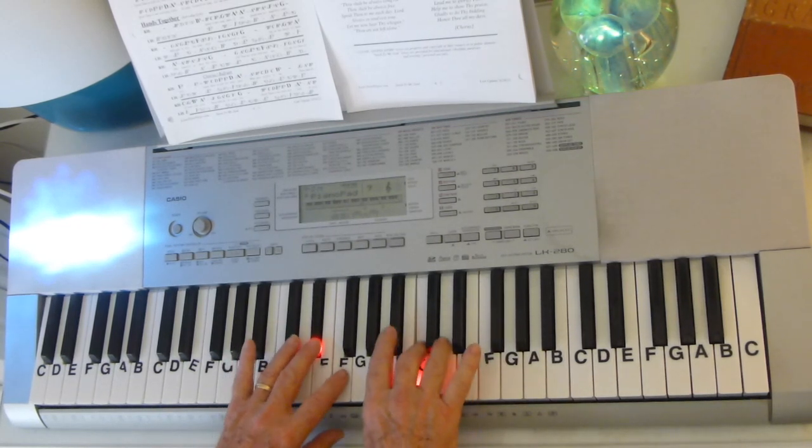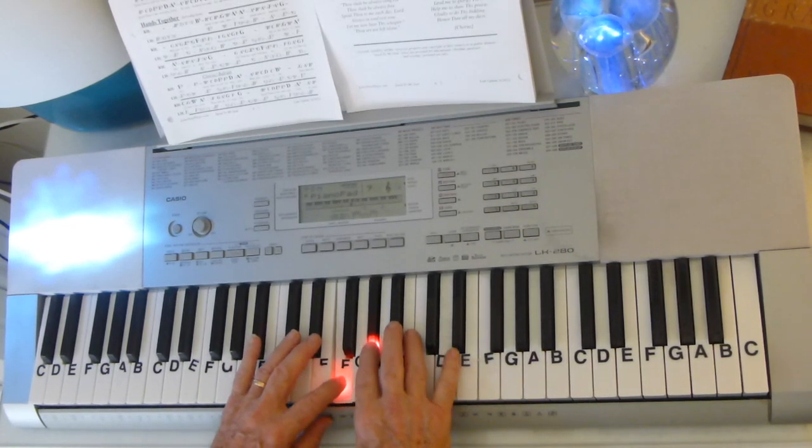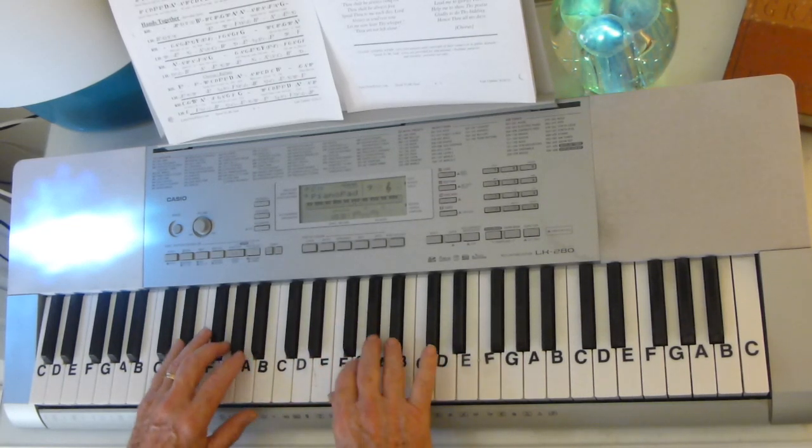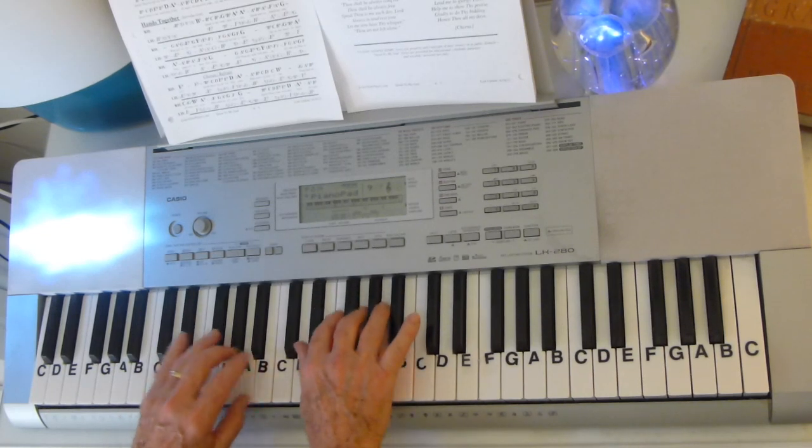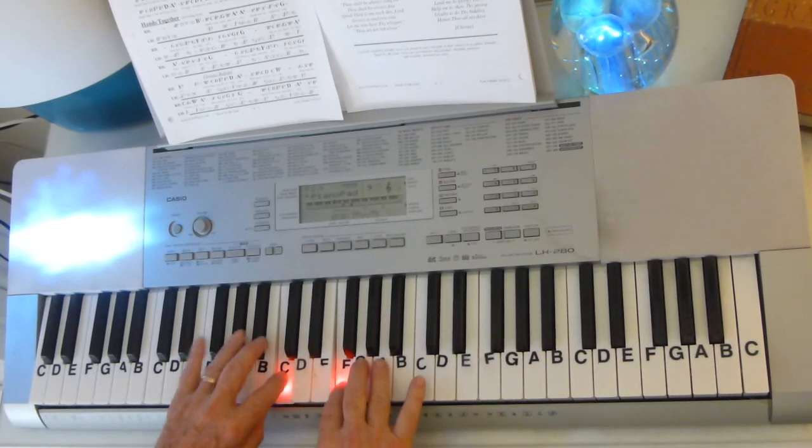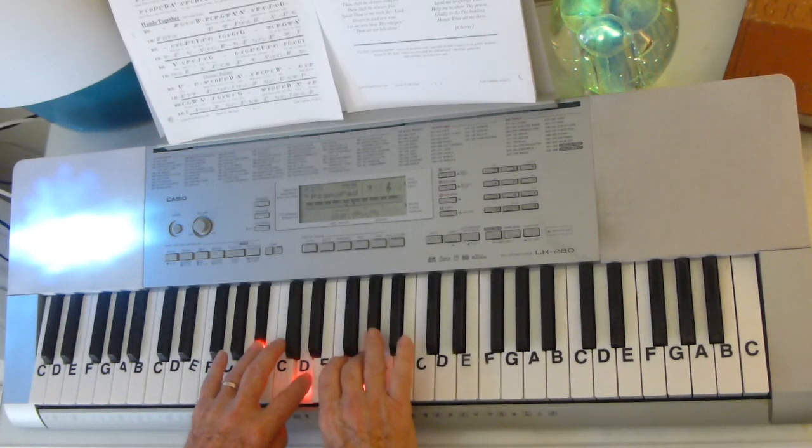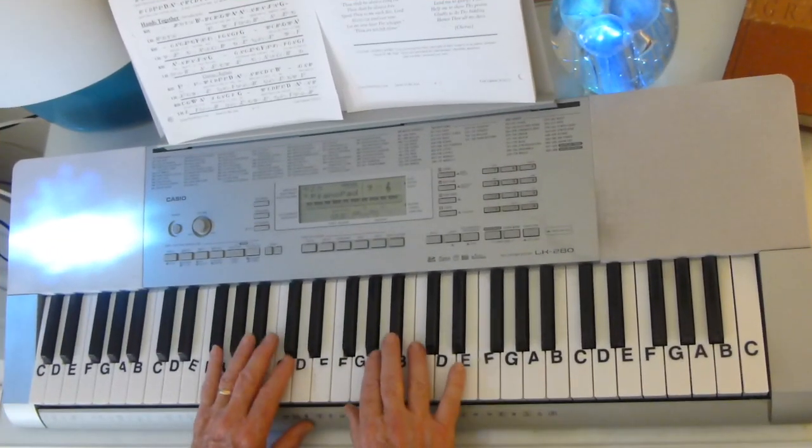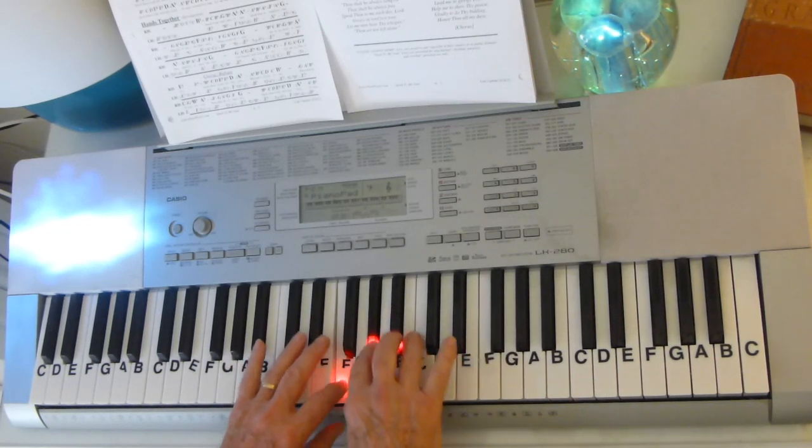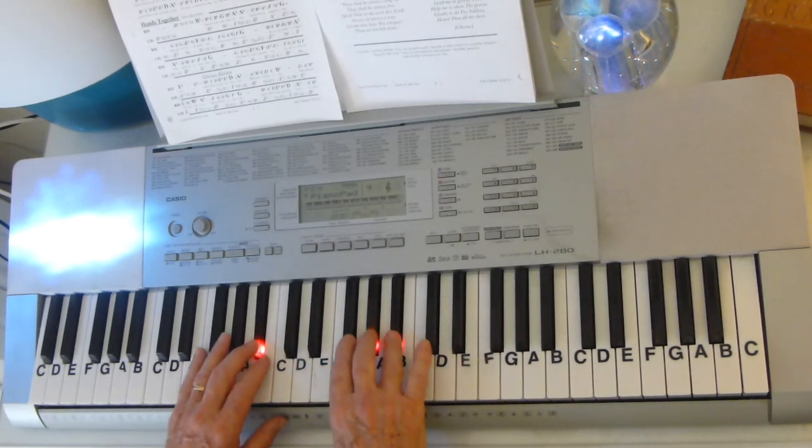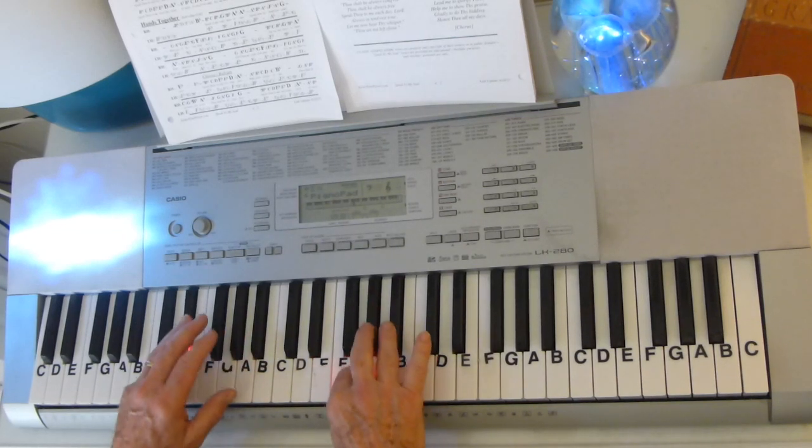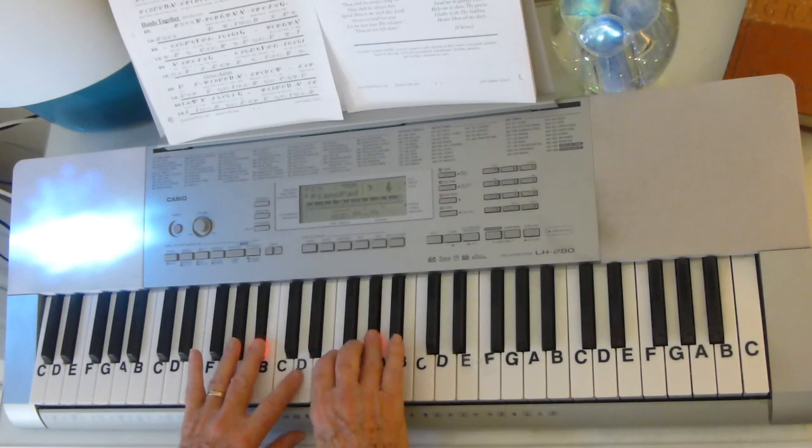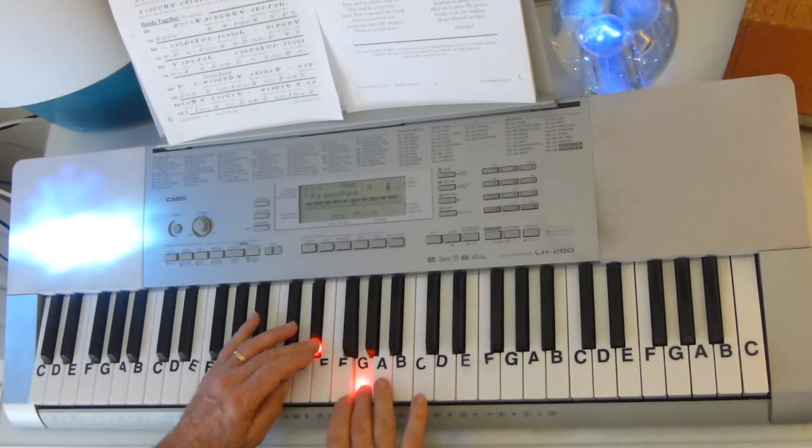So you can play it like this. It would be F, B-flat, A-flat, G, then E-flat, G, A-flat, C, then B-flat, D, E-flat. So if you want to play it, you can play it like that. Very simple.